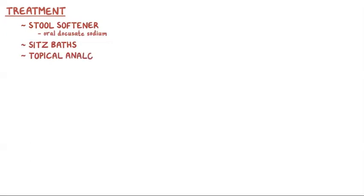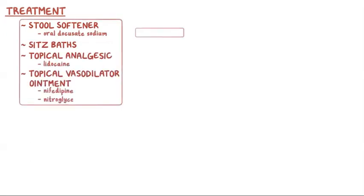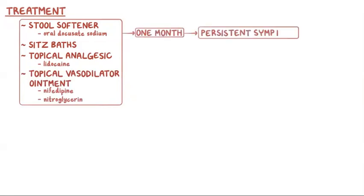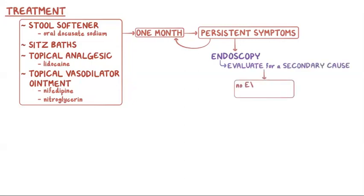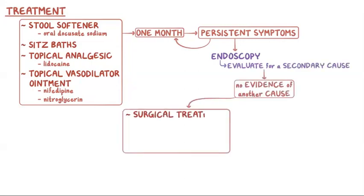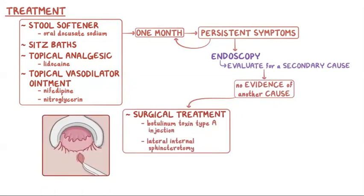Treatment for anal fissures involves a combination of a stool softener like oral docusate sodium, sitz baths, a topical analgesic like lidocaine, and a topical vasodilator ointment like nifedipine or nitroglycerin for one month. Individuals with persistent symptoms are given another month of the same treatment. After that, individuals who still have persistent symptoms are sent for an endoscopy to evaluate for a secondary cause. If there's no evidence of another cause, the individual may need surgical treatment like a botulinum toxin type A injection or a lateral internal sphincterotomy, in which the internal sphincter is divided to lower its resting pressure, which helps improve blood supply to the fissure and allows faster healing.